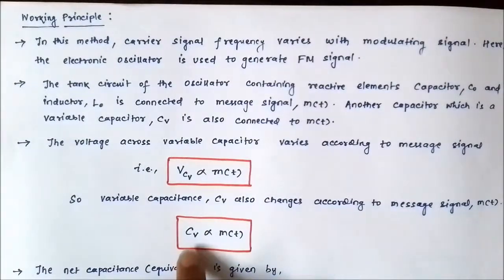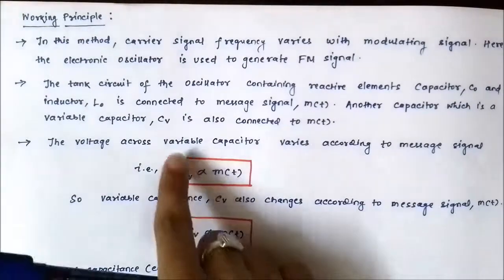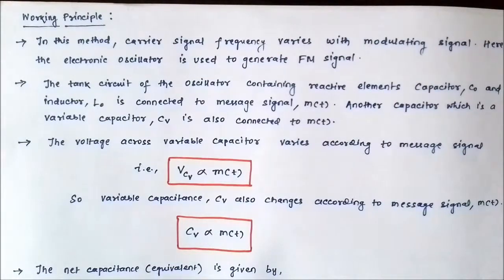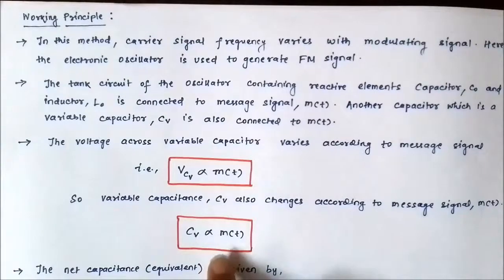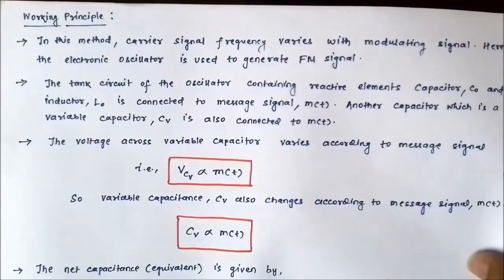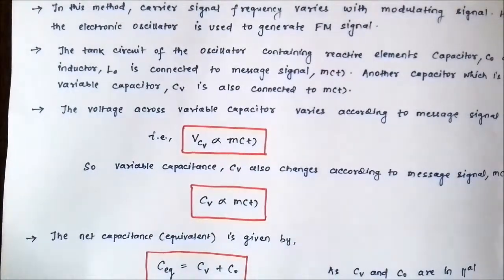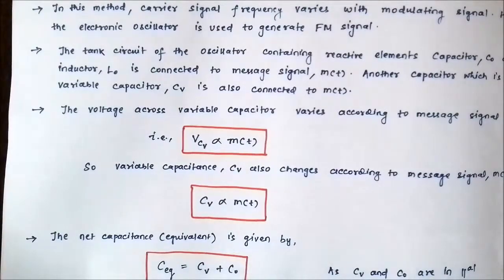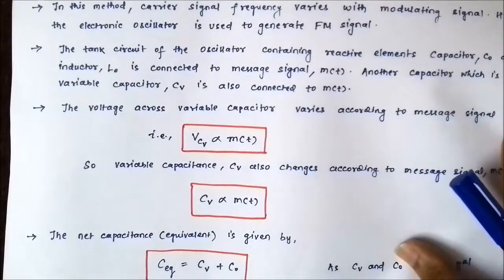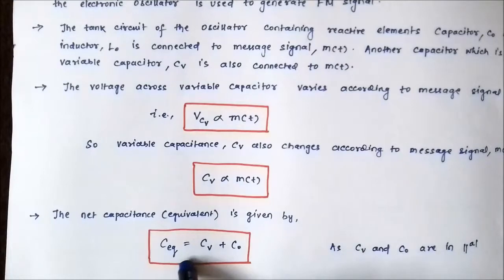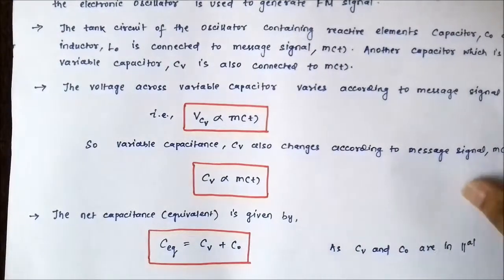The capacitance of the variable capacitor is directly proportional to the message signal, and the voltage across it is also proportional to the message signal. So as the message signal varies, so does the capacitance of the variable capacitor. This principle is utilized in the generation of the frequency modulated signal. The net capacitance of the LC combination — the equivalent capacitance — is given by CV plus C0, because both capacitors are in parallel, and parallel capacitances add.